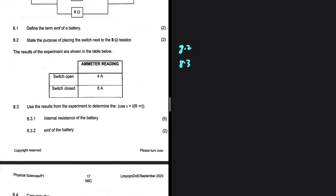Let's look at 8.3. The results of the experiment are shown in the table below. When the switch is open, we have a current of 4 amperes, and when the switch is closed, our current is 6 amps. For 8.3.1, we are supposed to determine the internal resistance of the battery using: EMF = I × (R_external + r).